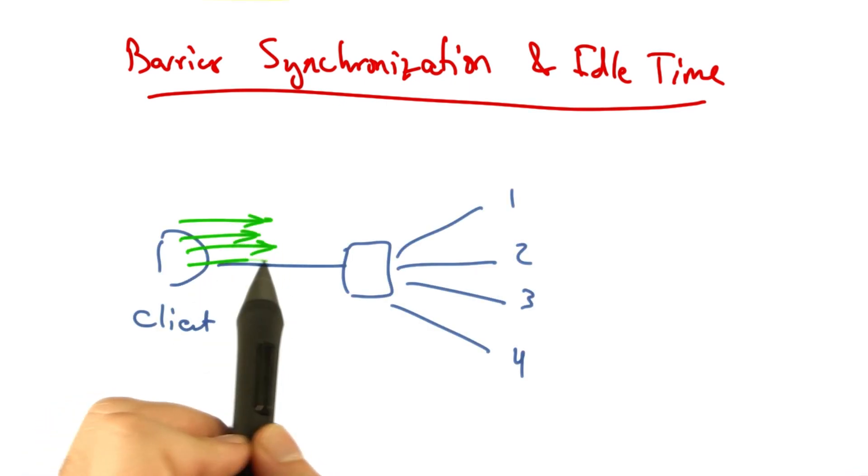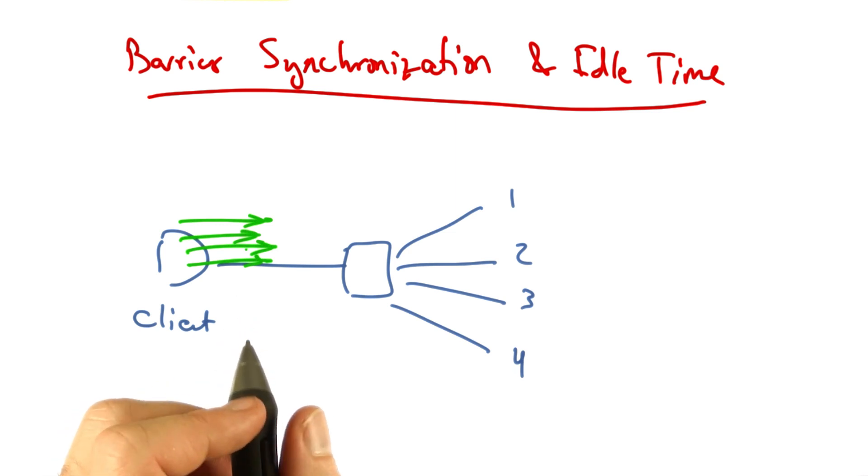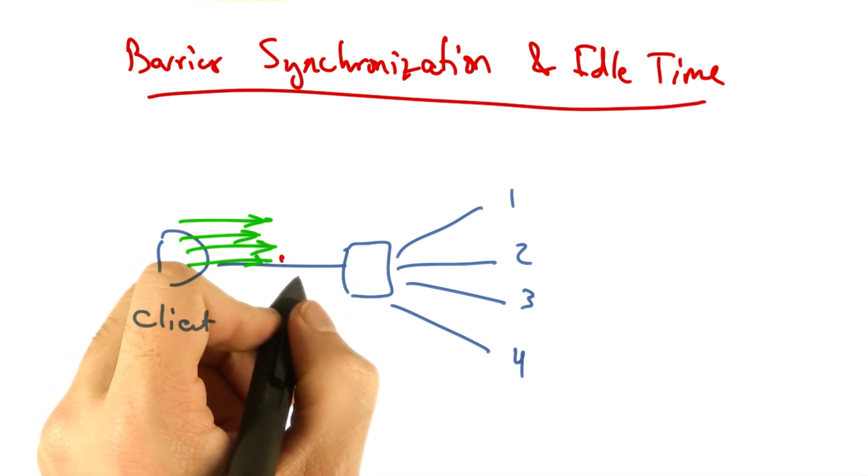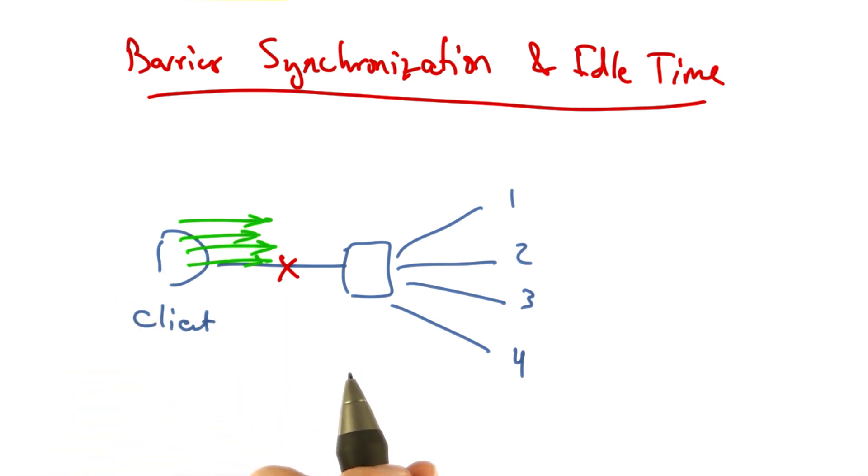For example, a client might send a synchronized read with four parallel requests, but suppose that the fourth is dropped.